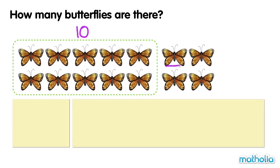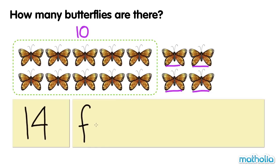Eleven, twelve, thirteen, fourteen. There are fourteen butterflies. Fourteen.